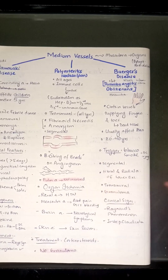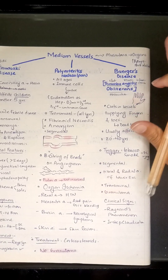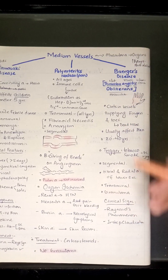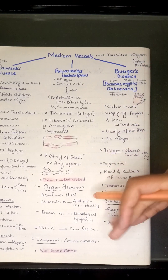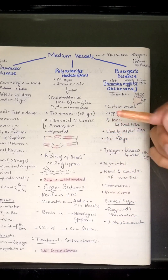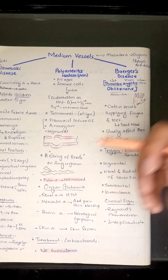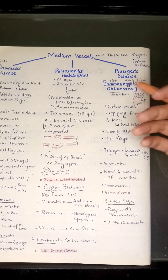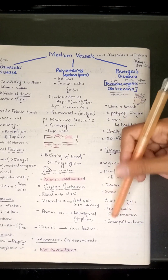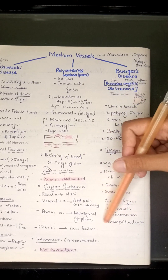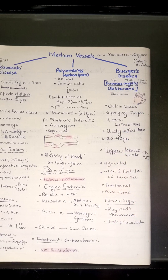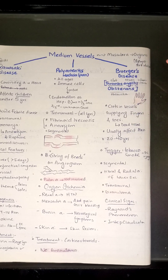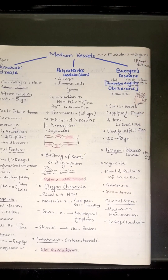Unlike PAN, Buerger's disease does have granuloma formation. The clinical signs include Raynaud's phenomenon — vasoconstriction to distal areas like fingers and toes — leading to cyanosis of the fingers and toes. It can also lead to instep claudication. This concludes the discussion on vasculitis of the medium vessels.